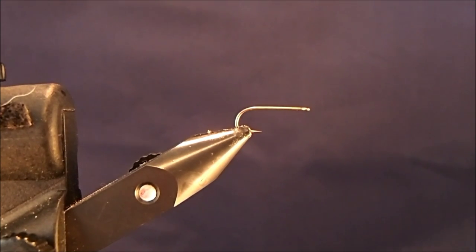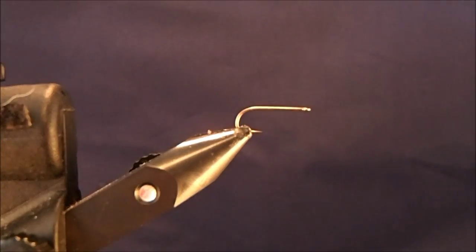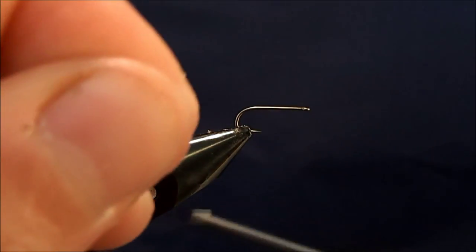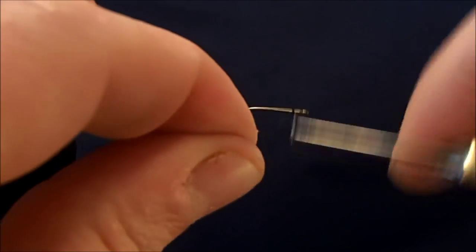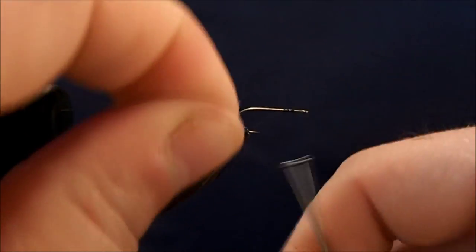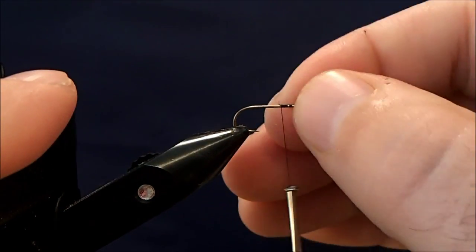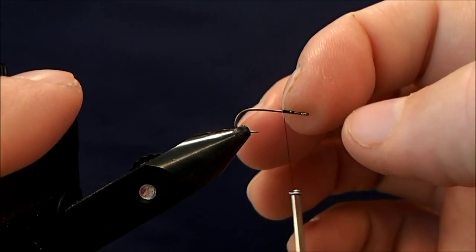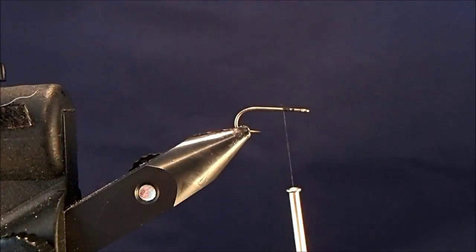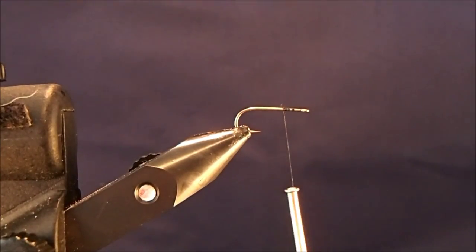This fly is an Adams and I'm starting off with a size 12 dry fly hook and I'm going to add some black thread. I'll give a couple of turns there just to get it nice and secure and bring it just maybe a third of the way or quarter of the way past the eye.